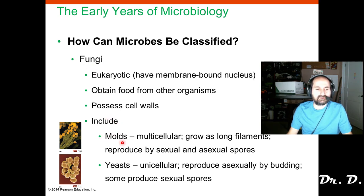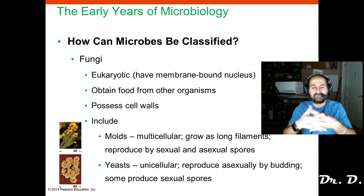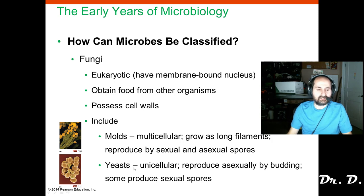You may want to know the difference between molds and yeasts — they're both types of fungi. Molds are multicellular; they grow as long filaments and can reproduce by sexual or asexual spores. Those long filaments are called hyphae, and they form a mycelium, which is the fuzzy network that you can see.